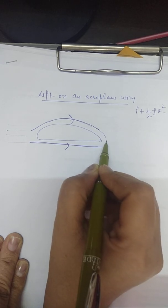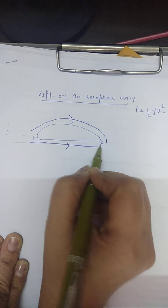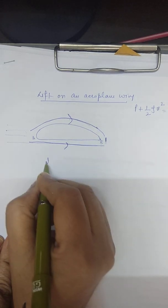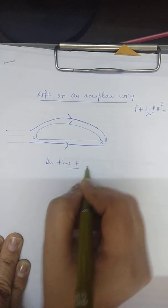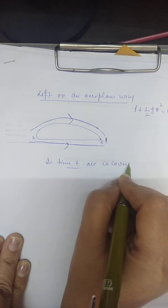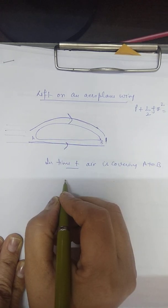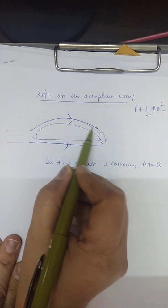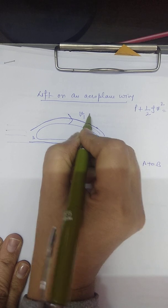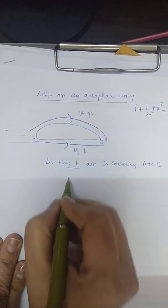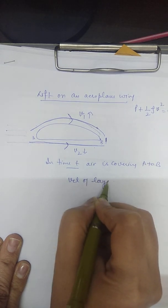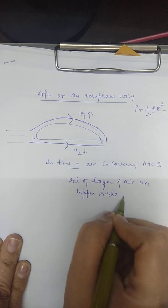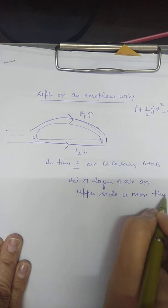Both parts of the air — upper and lower — reach the other end at the same time. In that time T, the upper layer must cover a longer path from A to B. Therefore, the velocity of the upper layer is greater than the velocity of the lower layer.